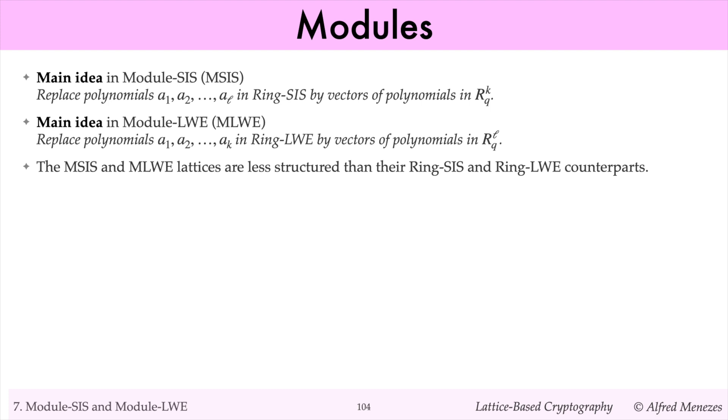One advantage of the module variants of the problem is that they are less structured than their ring counterparts. Recall that R is the ring of integer polynomials modulo x to the n plus 1. Rq is the ring of polynomials modulo x to the n plus 1, where now the polynomials have coefficients from the integers modulo q.